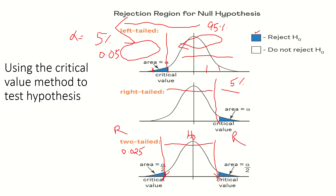This is how we calculate the test statistics and determine whether it falls in the acceptance region or rejection region, in order to accept or reject the null hypothesis. That's all for this lesson — see you in the next one.